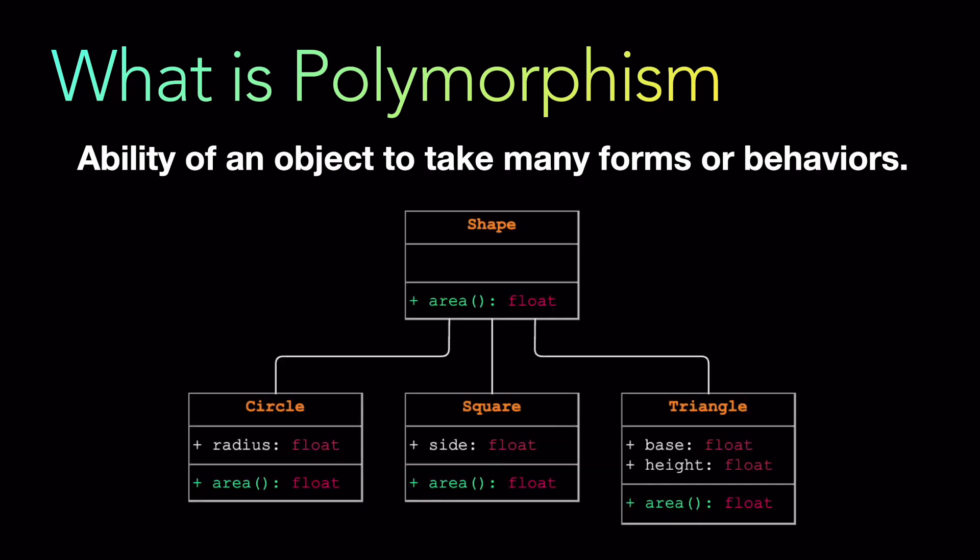Let's take an example. We have a shape class, which is the superclass, and it has an area method which calculates the area of the shape. With polymorphism, we extend that class and create three new subclasses of type shape — for example, circle, square, and triangle. Each shape has its own area calculation formula. So with polymorphism, we can write a single method to calculate the area for all shapes, because each shape can be treated as an instance of the common superclass, which in this case is shape.